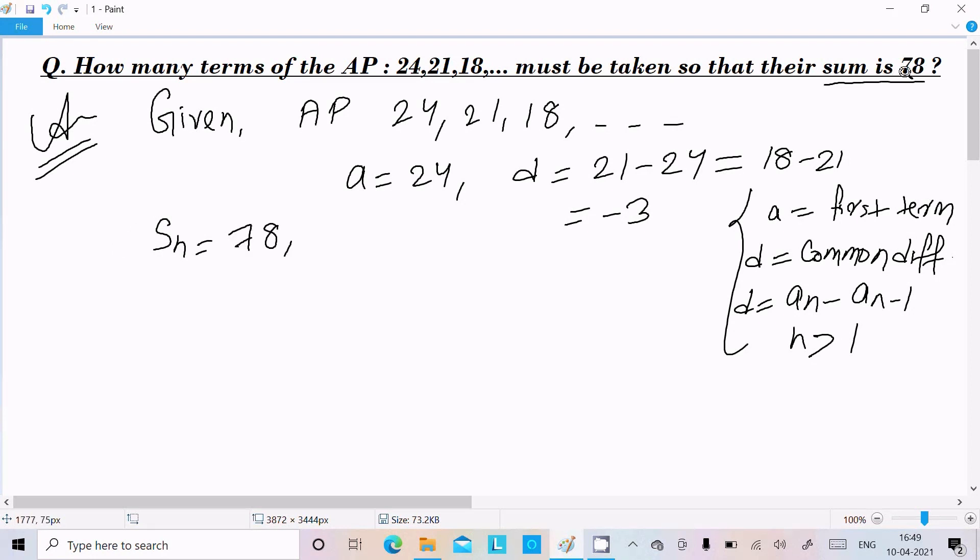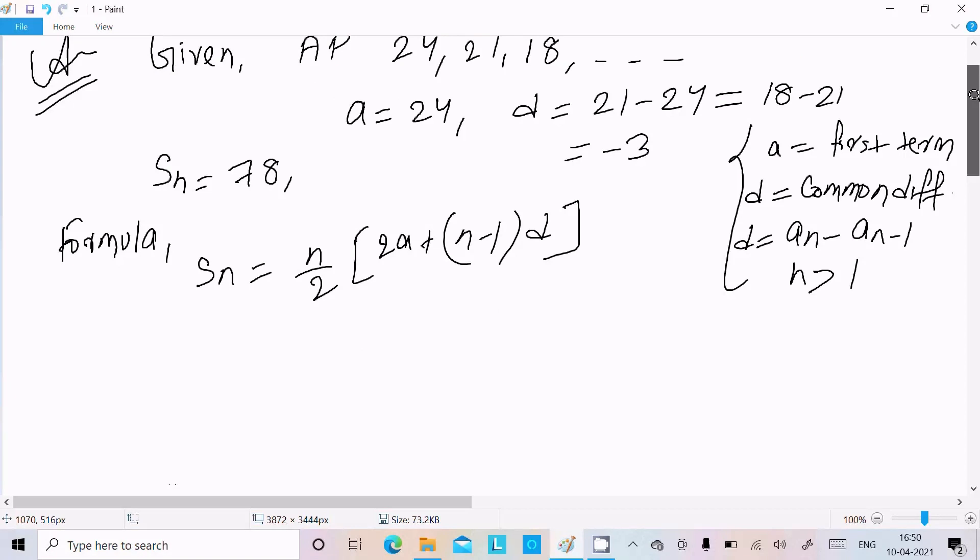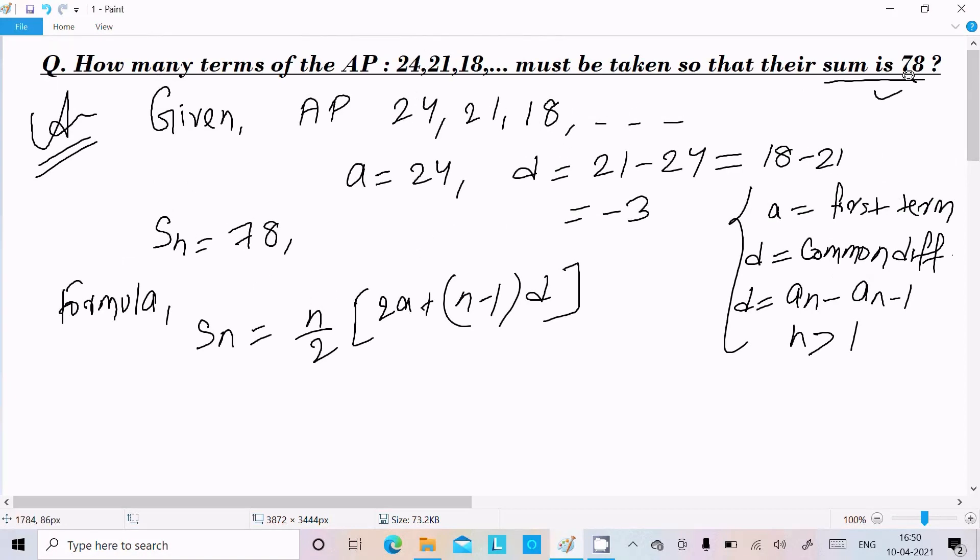S_n is given as 78, so the sum is 78. Now we know the sum formula: S_n equals n by 2, 2a plus (n minus 1) into d. We already have S_n value and we need to calculate n. a we know, d we know.